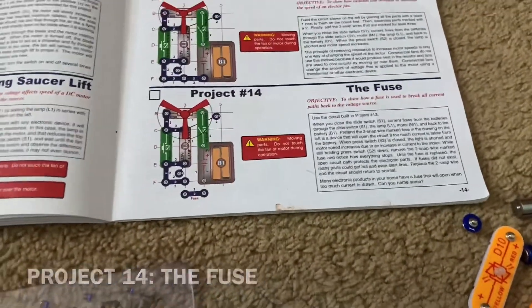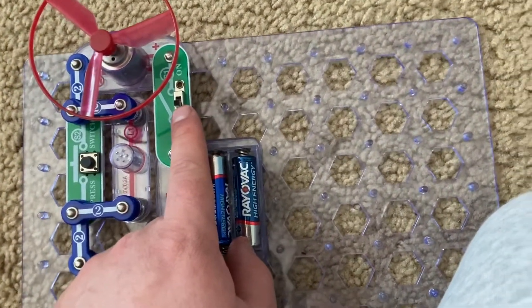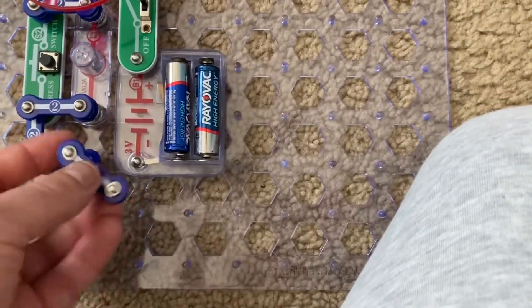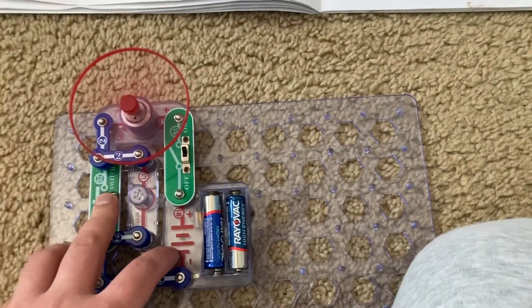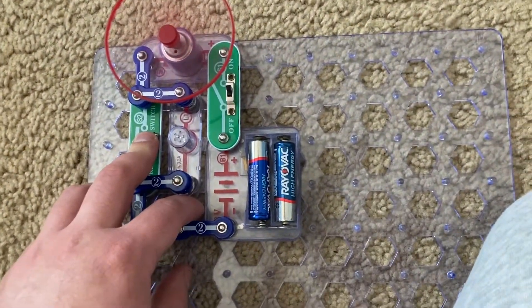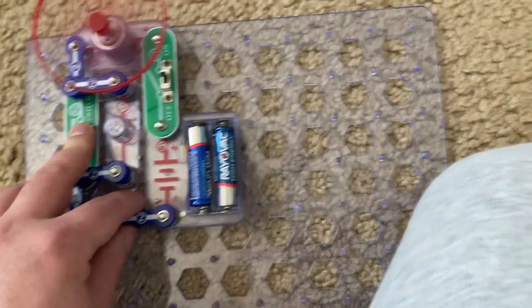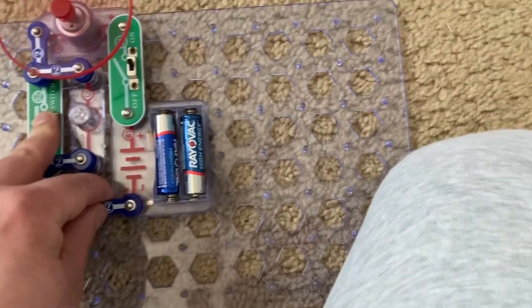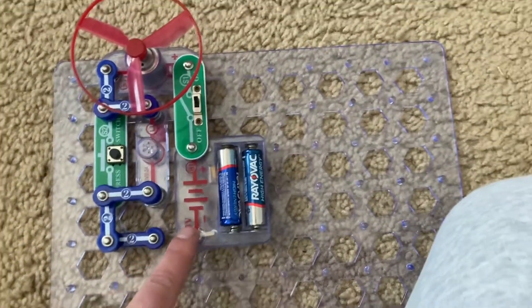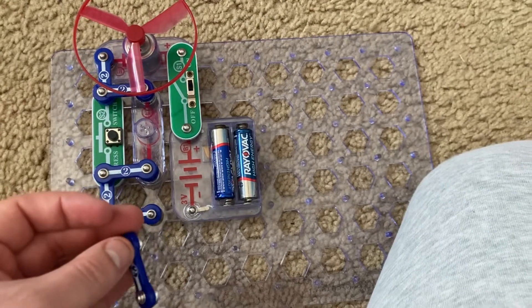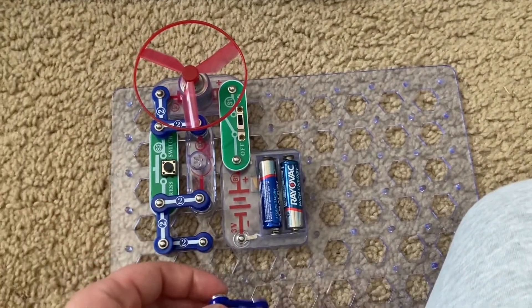Project 14 is the fuse. I'm going to turn on the slide switch and insert this two-snap wire. And then I'm going to hold down the press switch. The fan now rotates at full speed, and the light is shorted. And then when I remove this two-snap wire, everything stops. The motor comes to a complete stop. This is to act like a fuse that, in a real circuit, pops out if the circuit is overloaded with too much current. This is to prevent damage to electrical components and even fires that may start if parts get too hot.